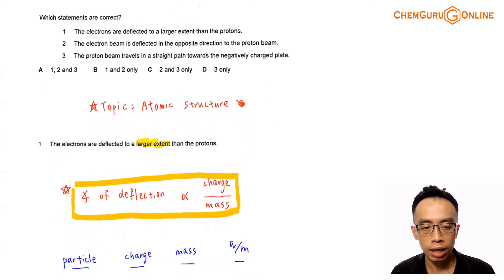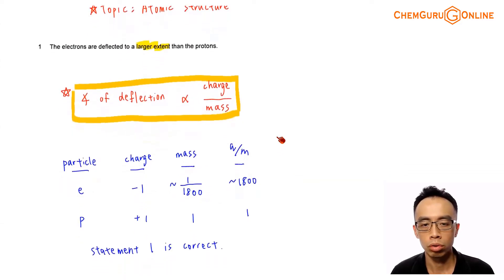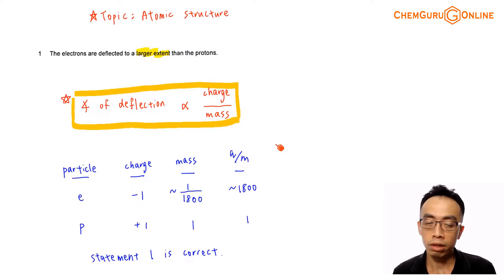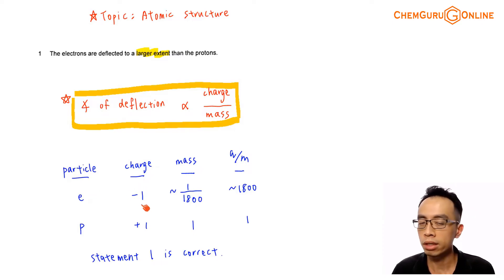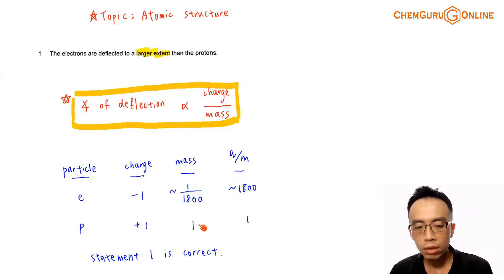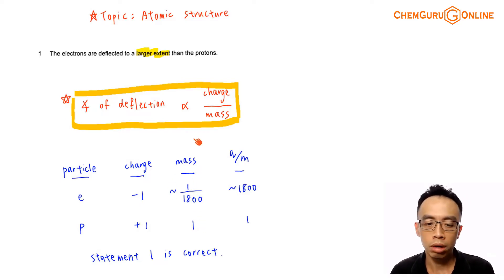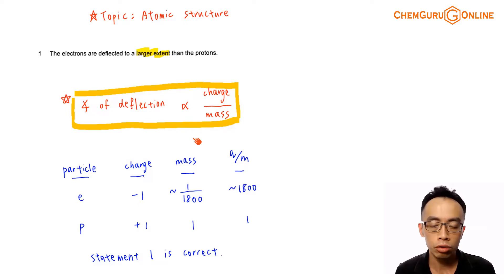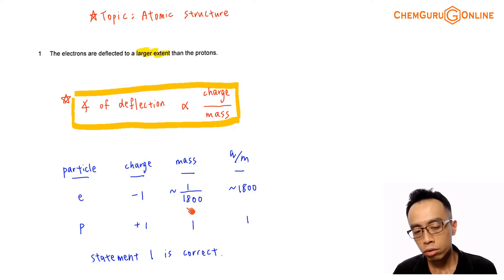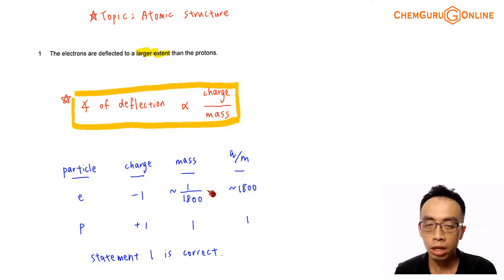Statement 1: the electrons are deflected to a larger extent than the proton. The extent of deflection, or the angle of deflection, is directly proportional to the charge-to-mass ratio. We can do a calculation involving this. For our subatomic particles — electron and proton — the charge of an electron is −1, and the charge of a proton is +1. The mass of a proton has a relative mass of 1, and the mass of the electron is significantly smaller — approximately 1/1800 of a proton's mass. We don't need to know this value very accurately.